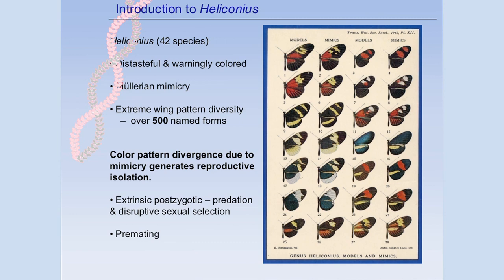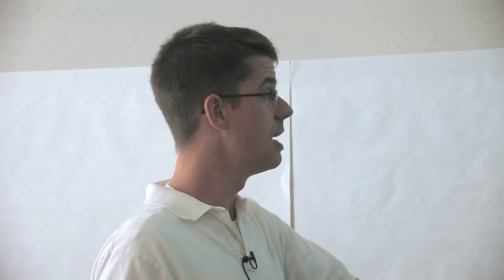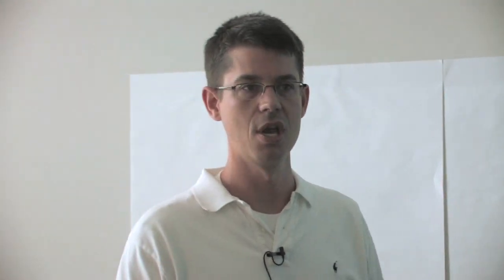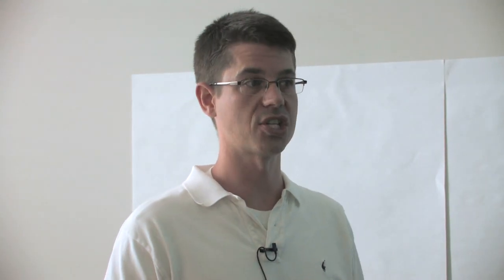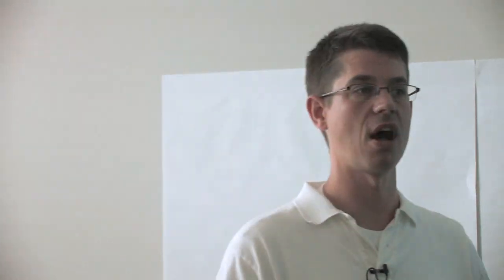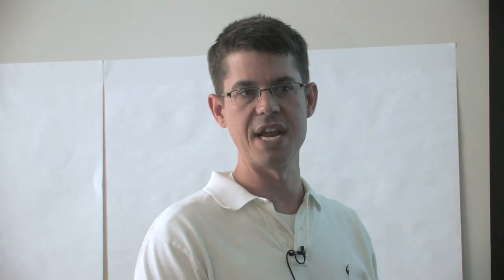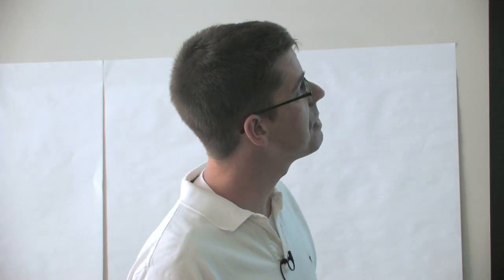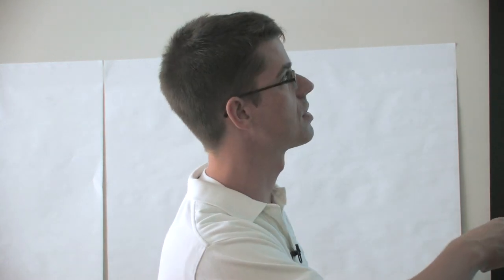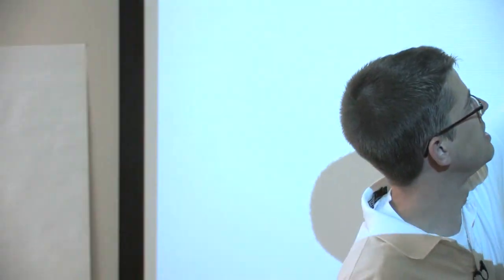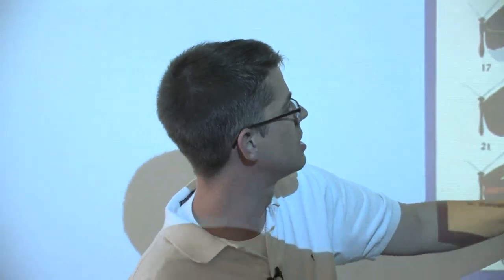Now into the butterflies. This is the neotropical genus Heliconius — the group we spend a lot of time studying. The whole genus consists of about 42 species. All the butterflies are distasteful: they eat passionflower vines as caterpillars, sequester nasty compounds from the passion vines, and some species actually manufacture compounds themselves. They warn predators of this distasteful experience with bright colors — this is warning coloration, also called aposematism.